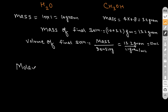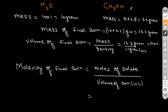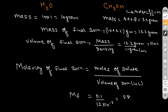Now we find the molarity of the final solution: moles of solute divided by volume of final solution in liters. The solute here is CS3OH. The number of moles of CS3OH is weight divided by molecular weight: 3.2 grams divided by 32 grams per mole, which equals 0.1 moles. So Mf equals 0.1 divided by 12 milliliters (converted to liters: 12×10⁻³), giving 25/3 molar. Hope you understand this.